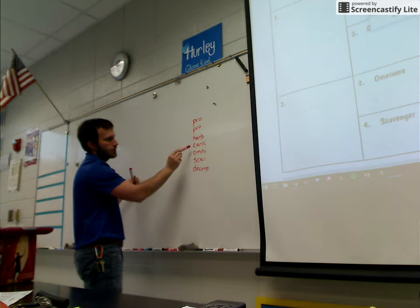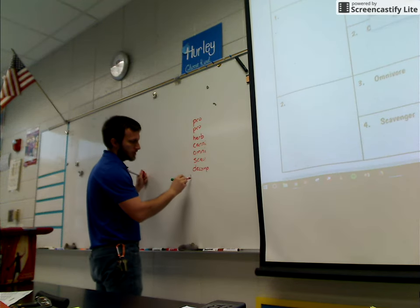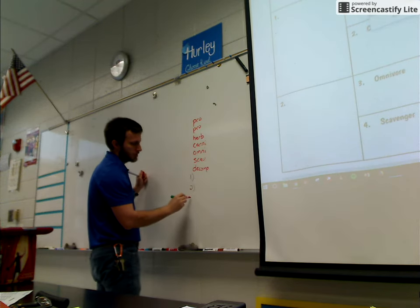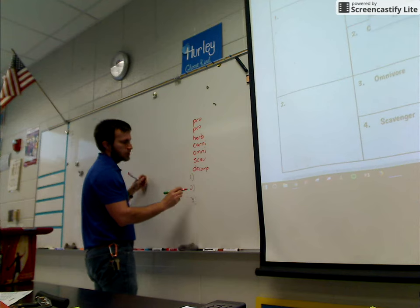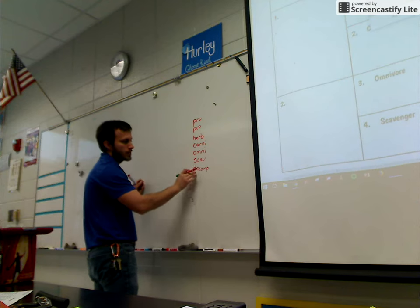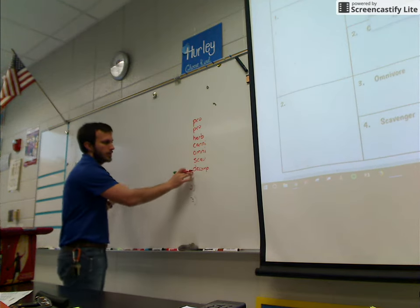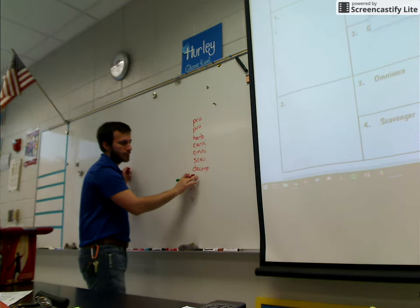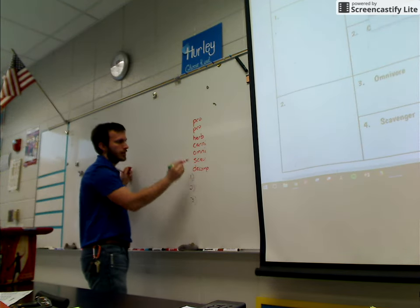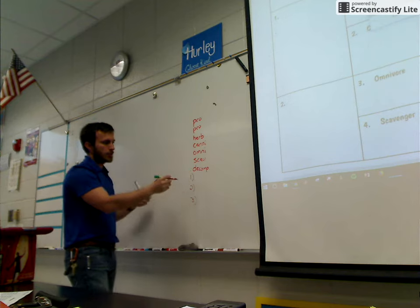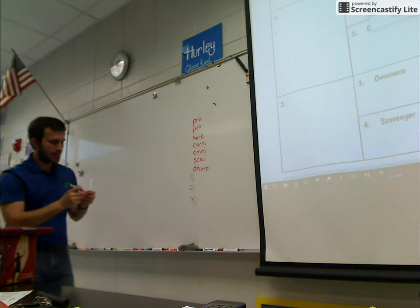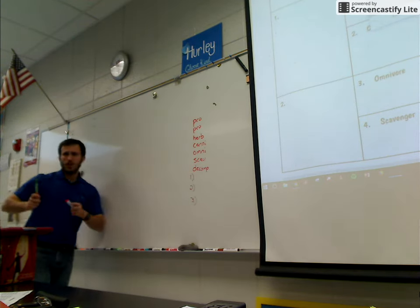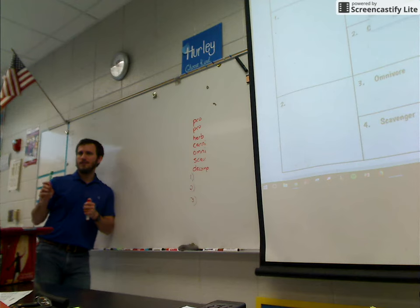So the last three you get to choose. You get to choose what trophic level these are on, whether they're any of these. So you can have three more producers, you can have three more carnivores and three more decomposers, or a mixture of any of those. So you have to have ten organisms total.